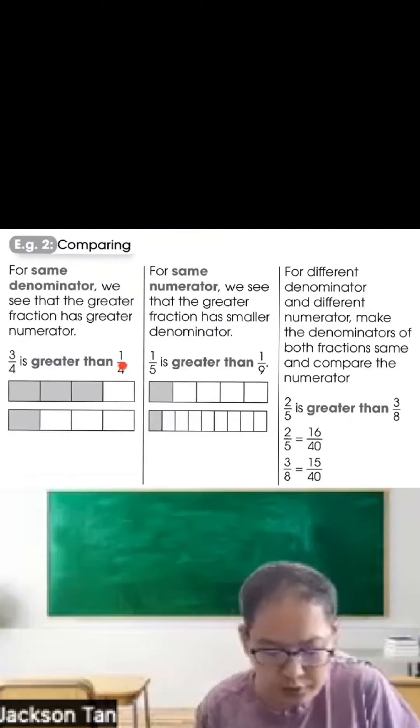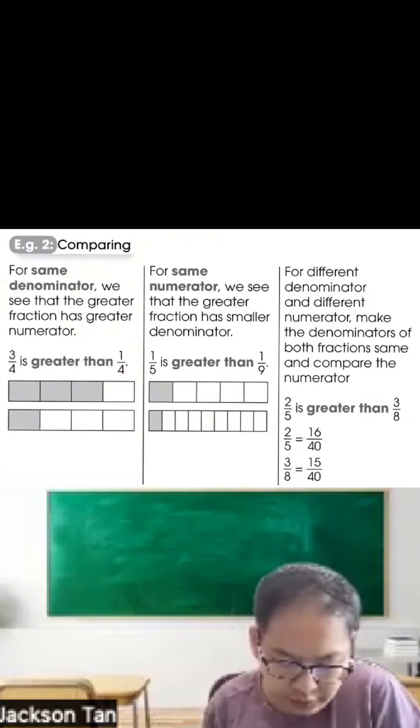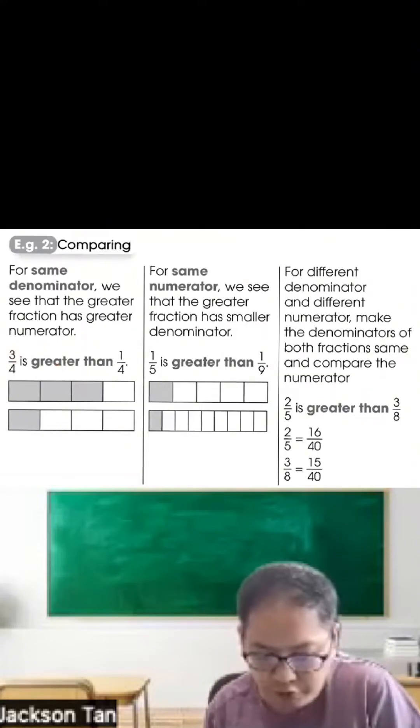So 3 quarters and 1 quarter, which is greater? If they have the same denominator, we look at the one that has the greater numerator. So 3 out of 4 is greater than 1 out of 4.